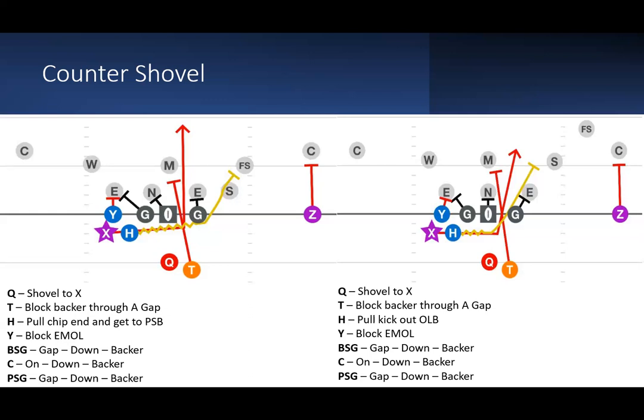The Y is going to block the EMOL on the backside. The backside guard is going to block A gap down backer, and then the center is going to block on down to the backer. So that guard and that Y who are blocking the EMOL, they're going to take that defensive end and run him and double and get to that backside weakside linebacker in a perfect world. And then the playside guard is obviously going to take that end that's on top of him. And knowing that the play comes with A gap, he's going to want to push him towards the B gap.